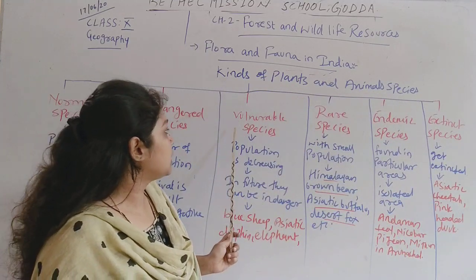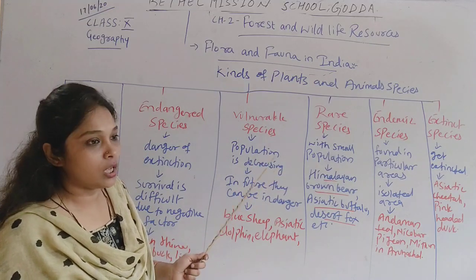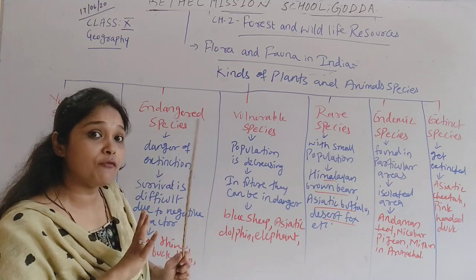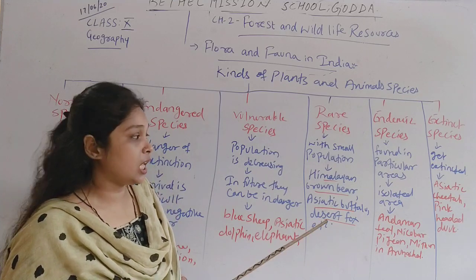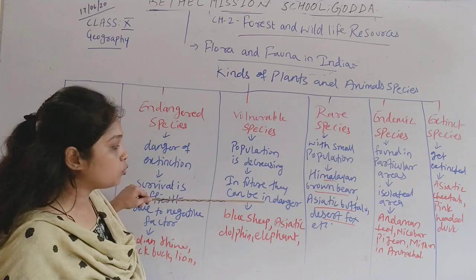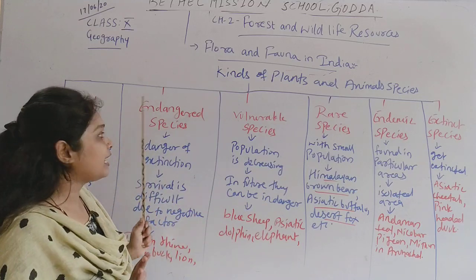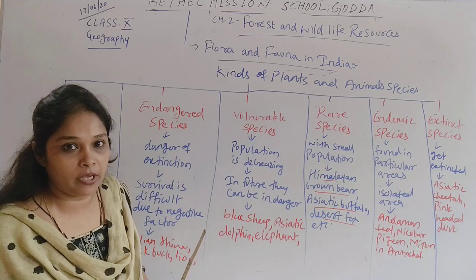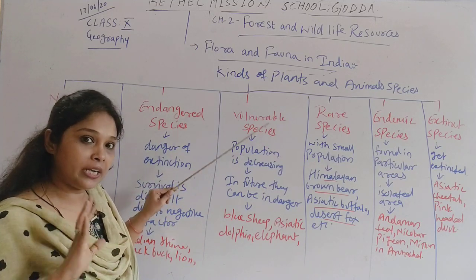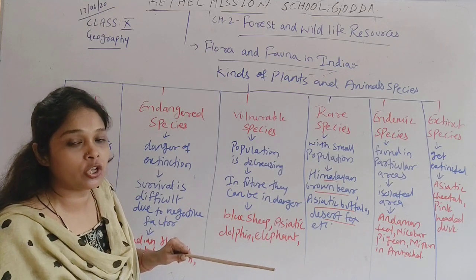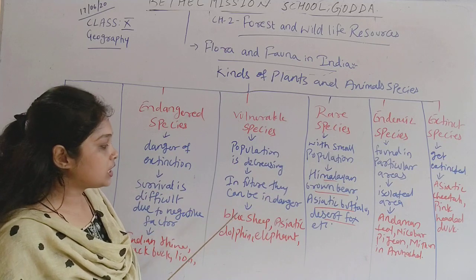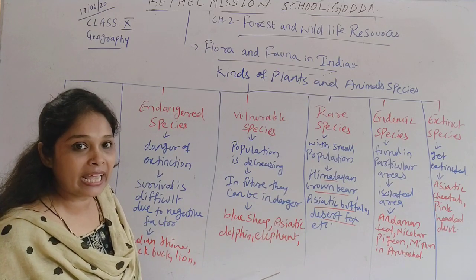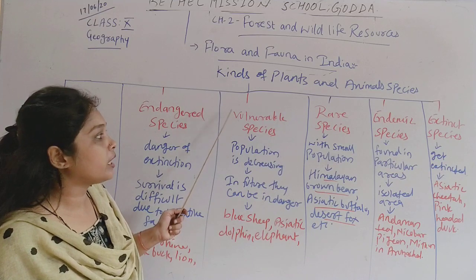The third category is vulnerable species — their population is decreasing day by day, and it is almost certain they will get extinct in the future if not protected. Unlike endangered species where we can still save them, vulnerable species are in full danger of extinction. Examples include blue sheep, Asiatic dolphin, and Asiatic elephant.